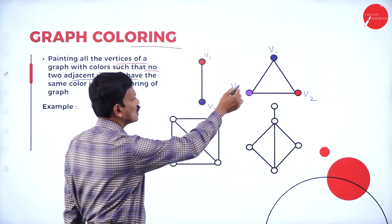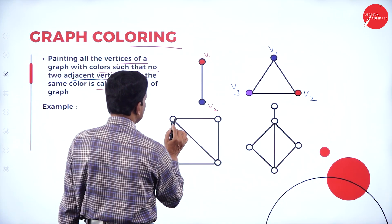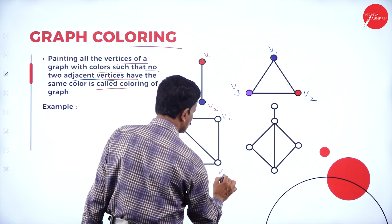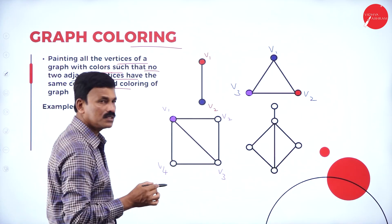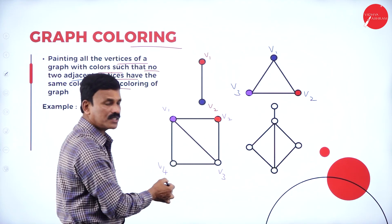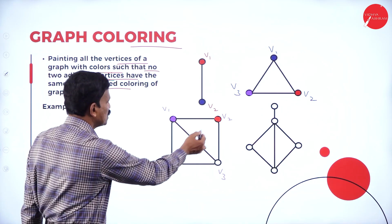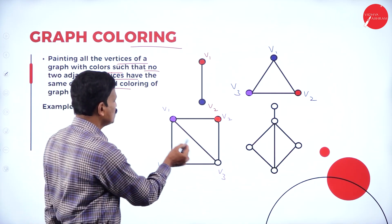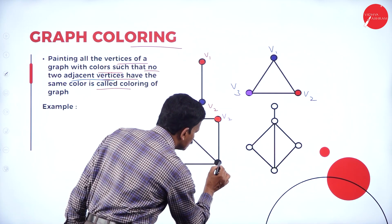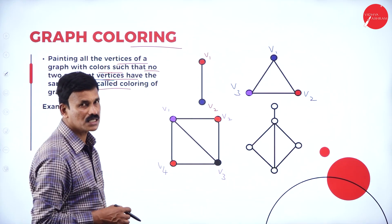Now let us come to this graph. There are four vertices: V1, V2, V3, and V4. Let us represent V1 by one color. V2 and V4 are not connected, so we can give the same color — red — for both V2 and V4. Whereas V3 is connected with V2 as well as with V1, so let us represent V3 by another color, black. So here four vertices are there but we have colored with only three colors.